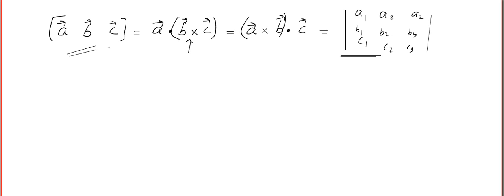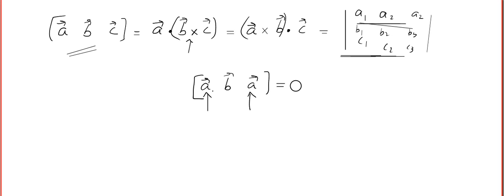Since the STP is a determinant, all the properties of determinants are valid for STP. If two vectors repeat in an STP — even if they are multiples — the determinant value will be zero, so the STP will vanish. Remember: if two vectors are parallel or identical, the STP will vanish.